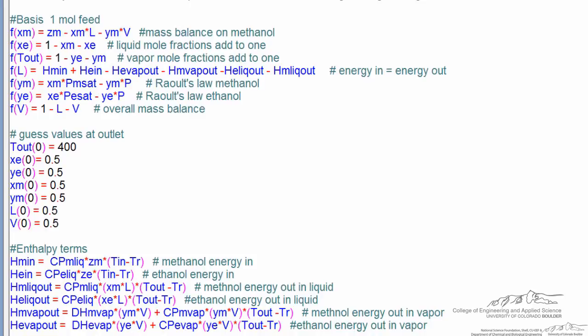First thing, of course remember that comments just have the number sign in front of them and they show up in a different color. But the way the nonlinear equation solver works is we write equations on the right side of the equal sign that we want to be equal to zero.